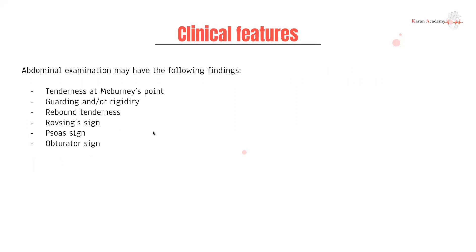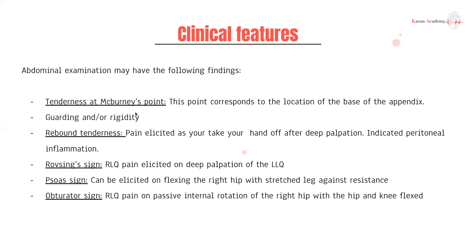The abdominal examination — you would start with palpation and percussion, but a few specific signs elicited with acute appendicitis are: tenderness at the McBurney point, guarding and/or rigidity, rebound tenderness, the Rovsing sign, and the obturator sign. The McBurney point is the physical location which corresponds to the base of the appendix.